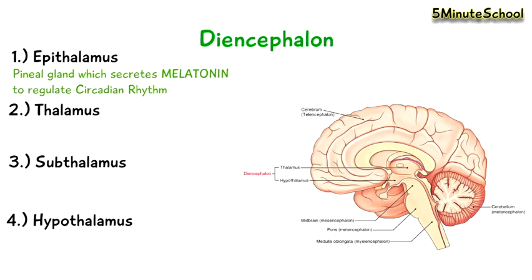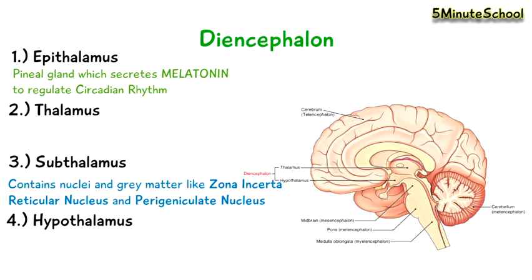The subthalamus contains nuclei and grey matter like the zona inserta, reticular nucleus, and the periguniculate nucleus.